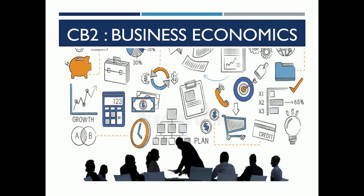Hello students. In this video I will be giving an introduction on CB2 Business Economics — how the paper pattern is, what is the structure of the exam, what is the syllabus, and what are the differences between CT7 and CB2. This is considered to be one of the easiest papers, though it was easier when it was CT7 because a lot of the content was similar to class 12 economics. In CB2 there are many additional chapters and topics, and the paper has become more application-based, so it requires a little more time to study.